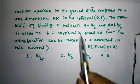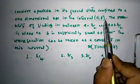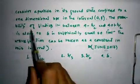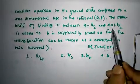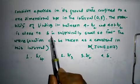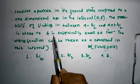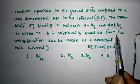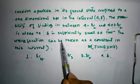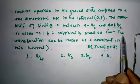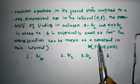The probability of finding the particle between this limit is close to... Delta is sufficiently small so that the wave function can be taken as a constant.